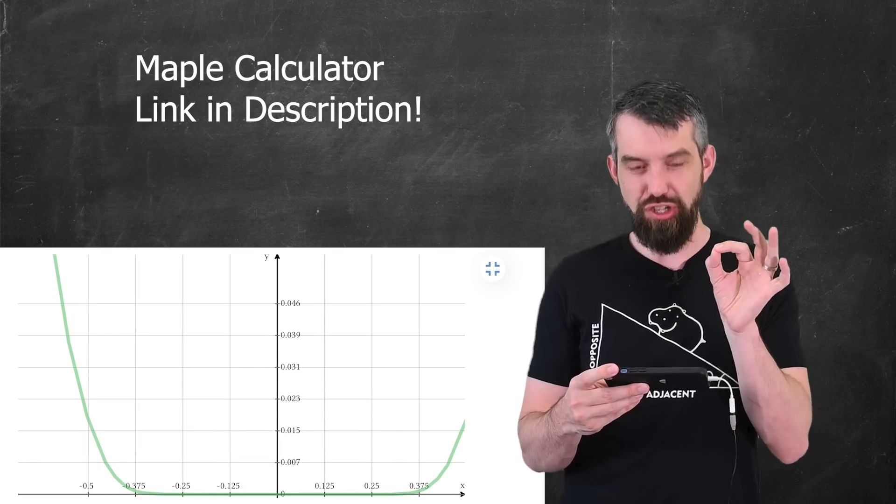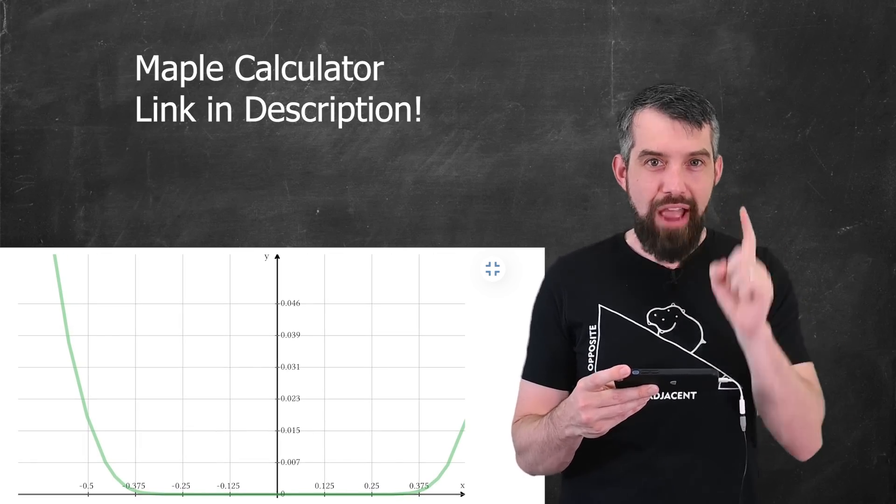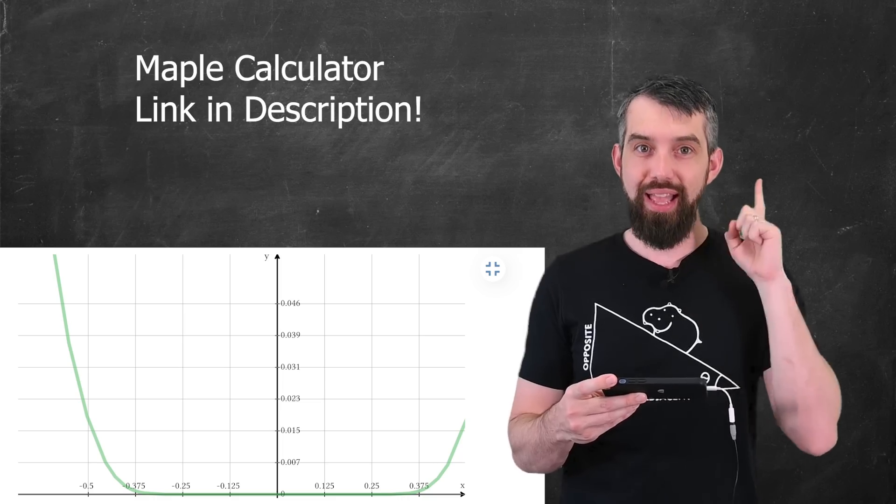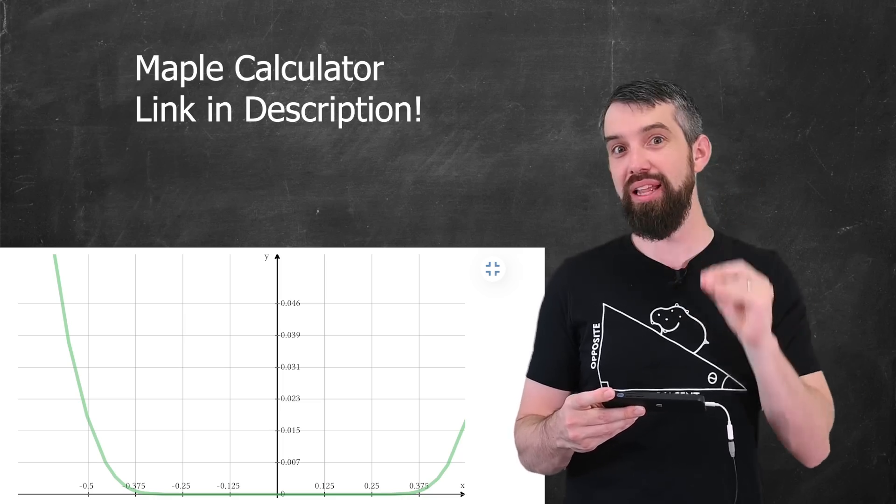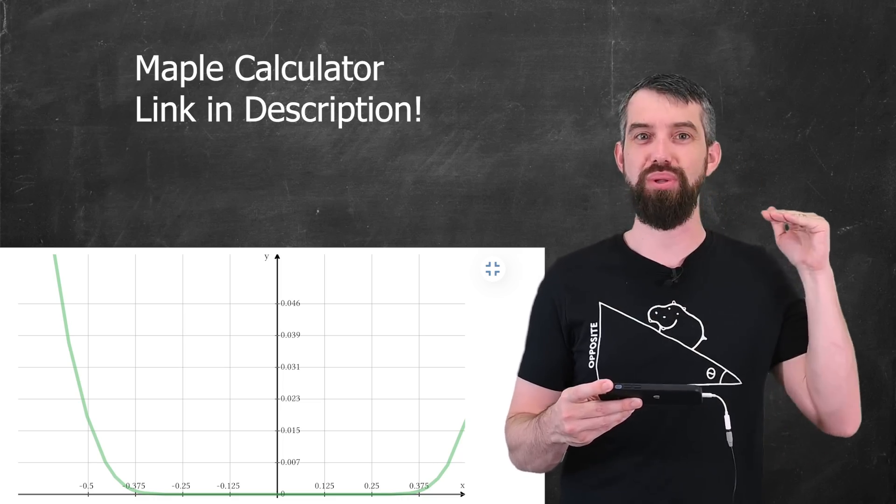And that's because this function is very special. It's a function where every derivative at 0 is 0. It cannot tell at 0 that this thing is not just a horizontal line.